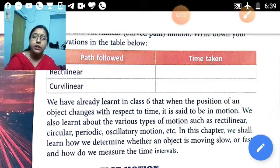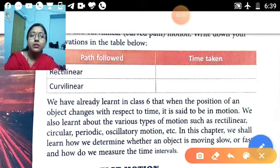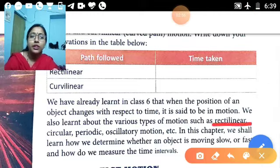Number 1: rectilinear motion. Number 2: we have the circular motion. Underlined rectilinear motion. Then we have the circular motion.